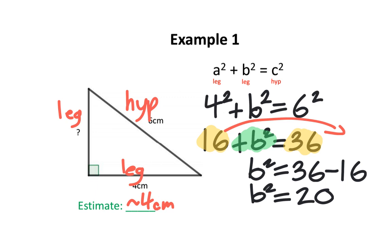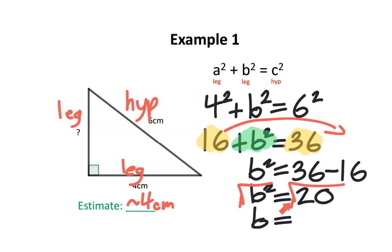Something looks strange — we're getting an answer of 20, but our estimate was around 4 centimeters. We also know the hypotenuse must be the biggest side. Over here we have b to the power of 2, and the opposite of an exponent is a square root. So we are going to square root both sides of this equation. The square root and the exponent of 2 are opposites, so they cancel out, leaving just b. Using your calculator, you can find the square root of 20, which is approximately 4.5. We estimated this unknown leg to be about 4 cm, and our calculation gave us exactly 4.5 centimeters.